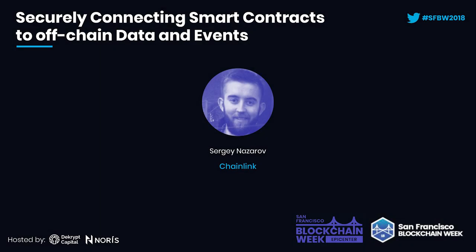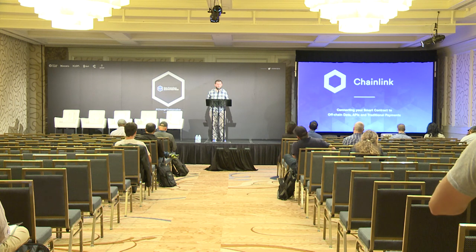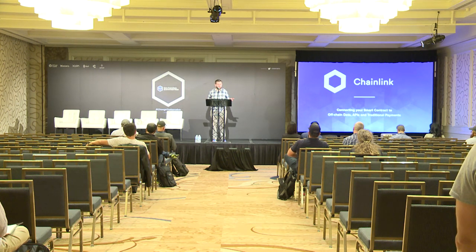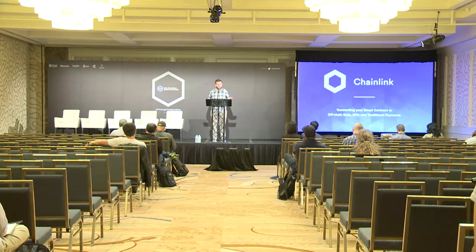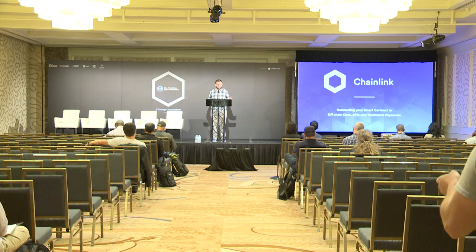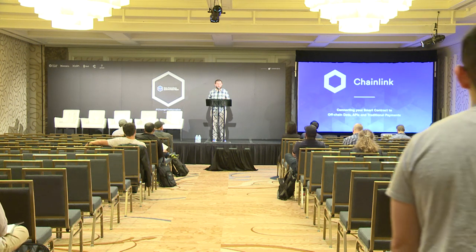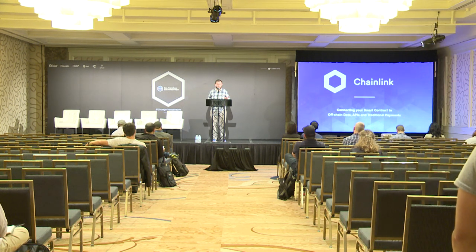Hi everyone, thanks for coming. The topic we're going to be covering is how we take smart contracts and make them useful for real-world events. For a smart contract to be a useful form of digital agreement, it needs to know about those real-world events — market price changes, IoT data for insurance, GPS location for trade finance — and it needs to reliably receive these inputs.